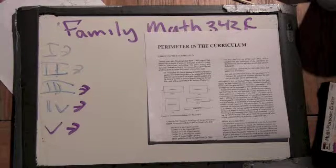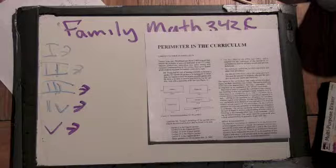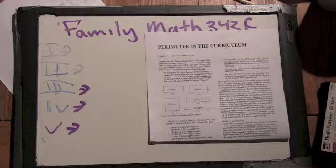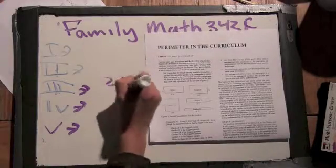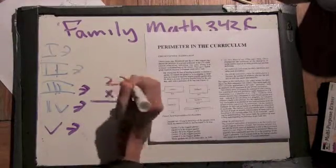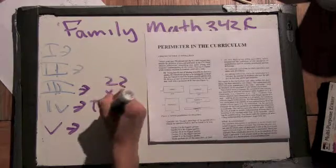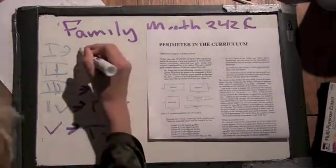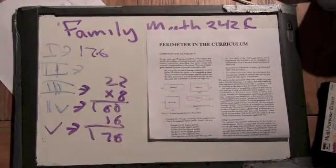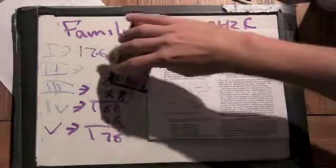Eight times twenty-two. Let's see. Twenty-two times eight. It's sixty... So it has an area of one seventy-six.